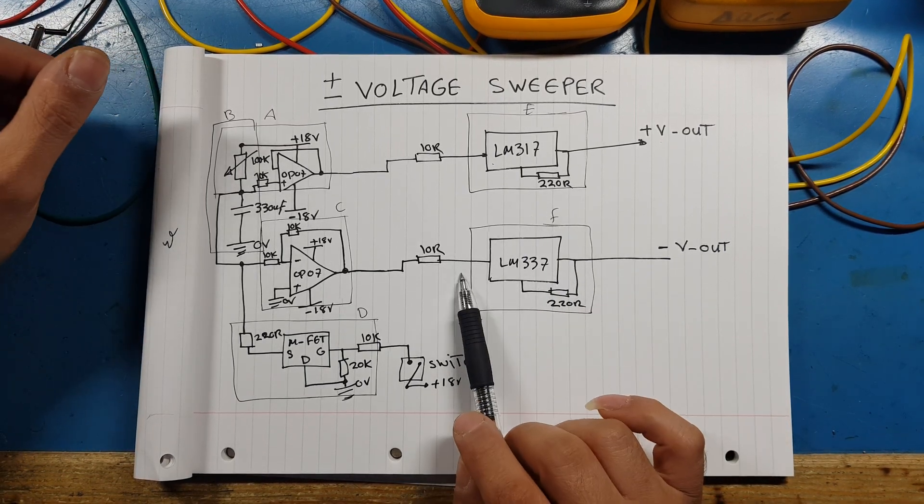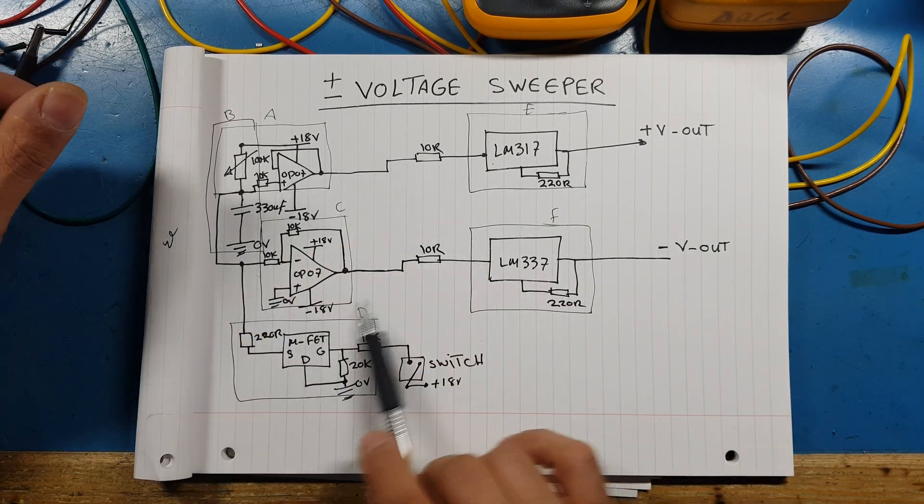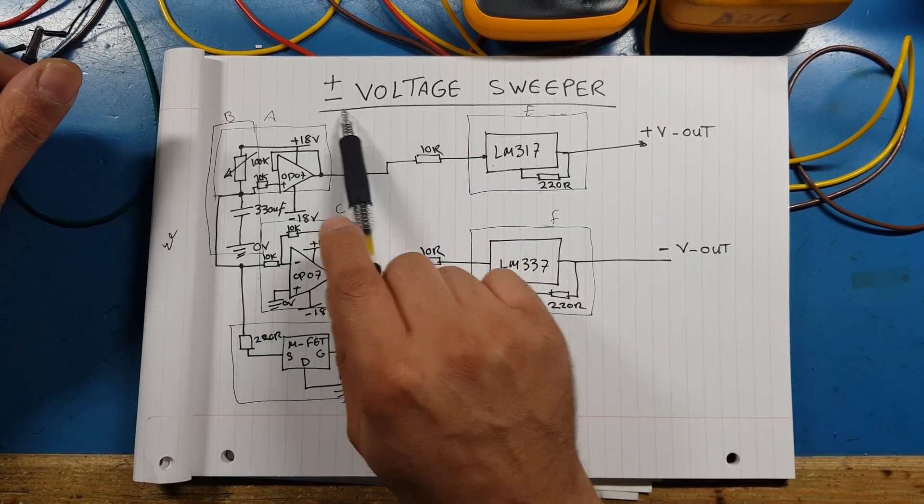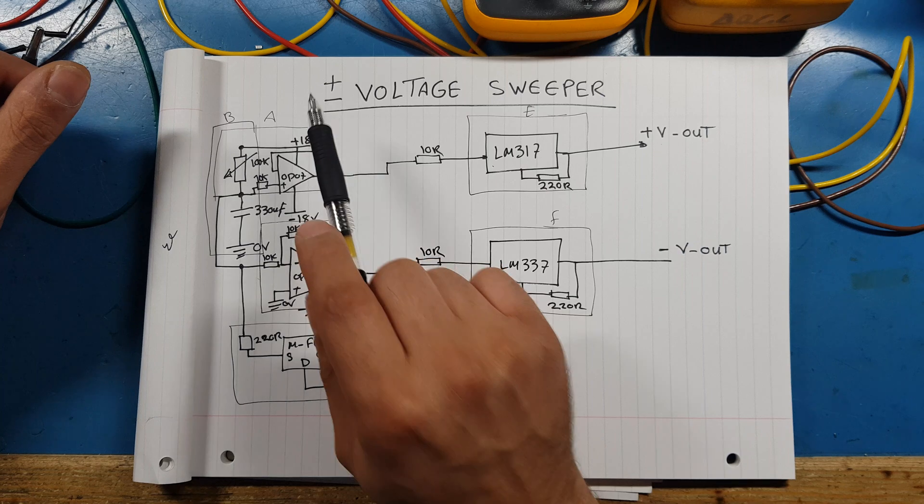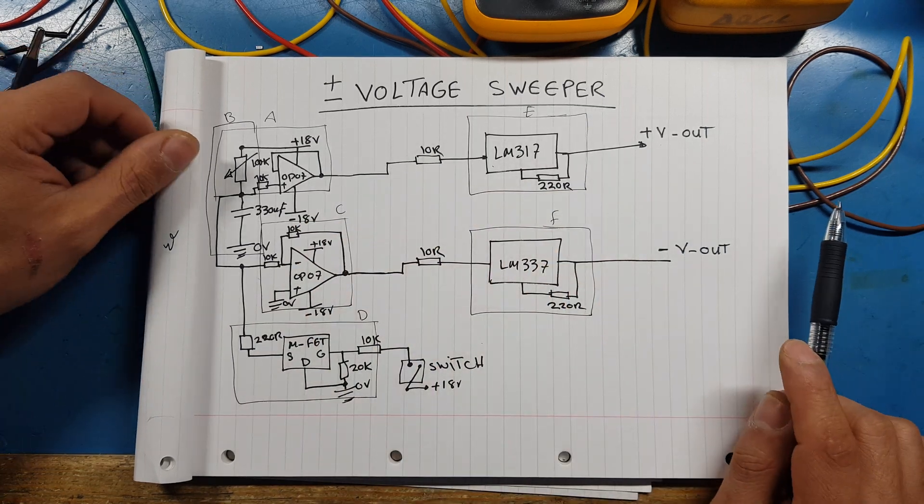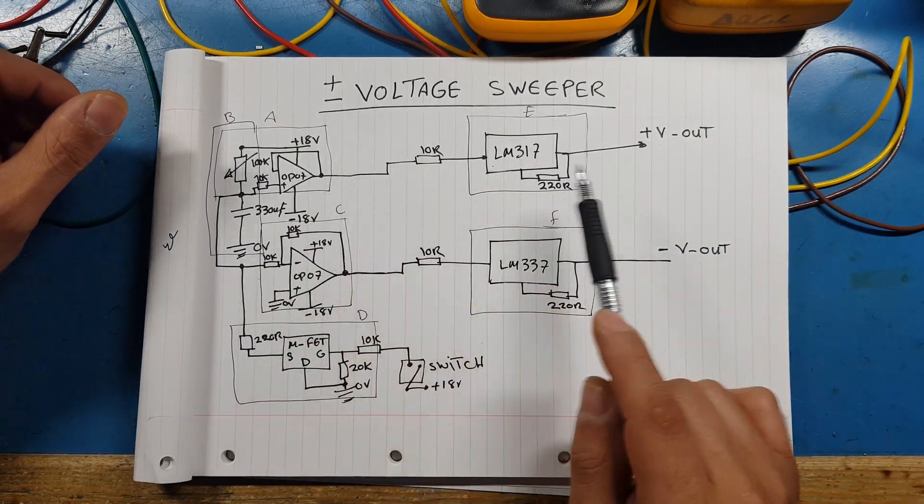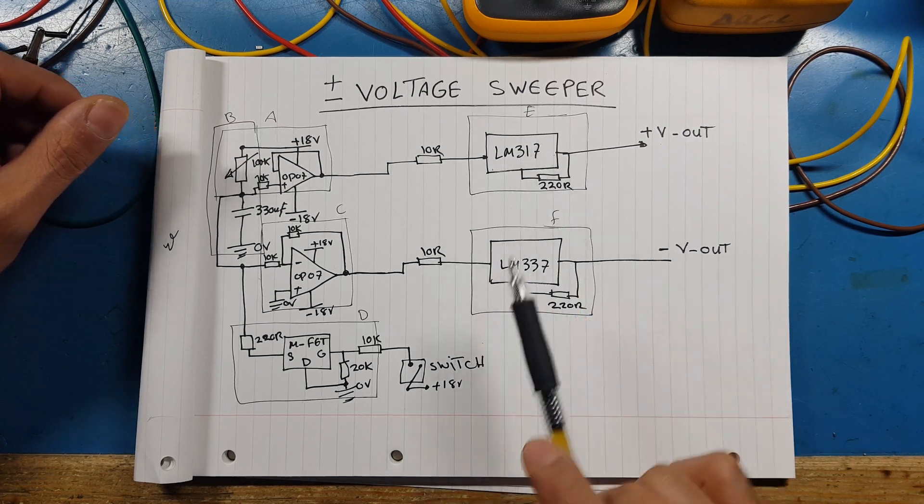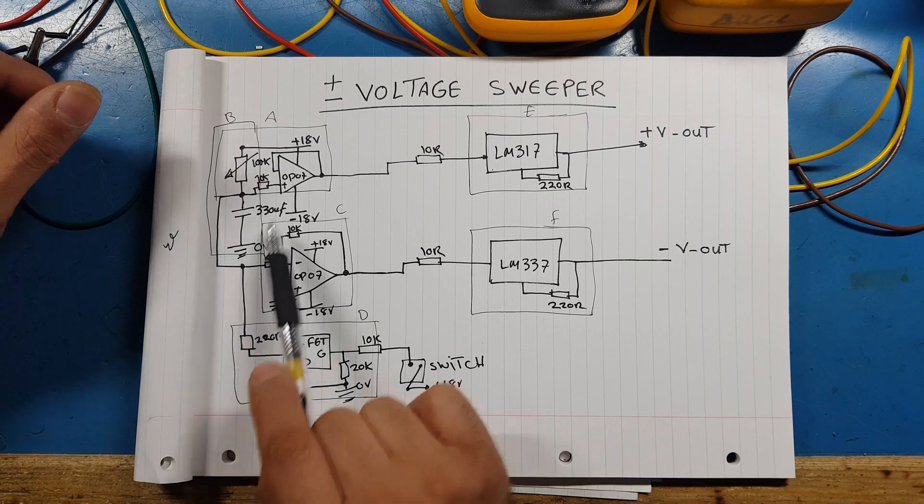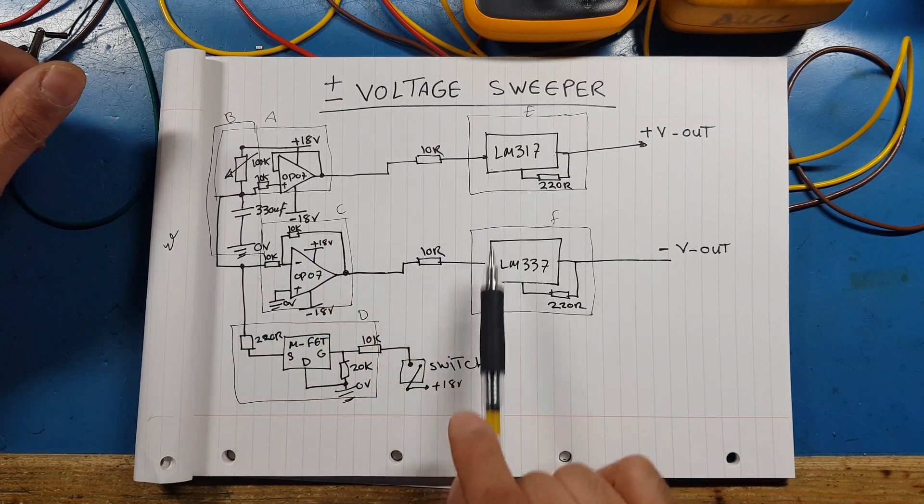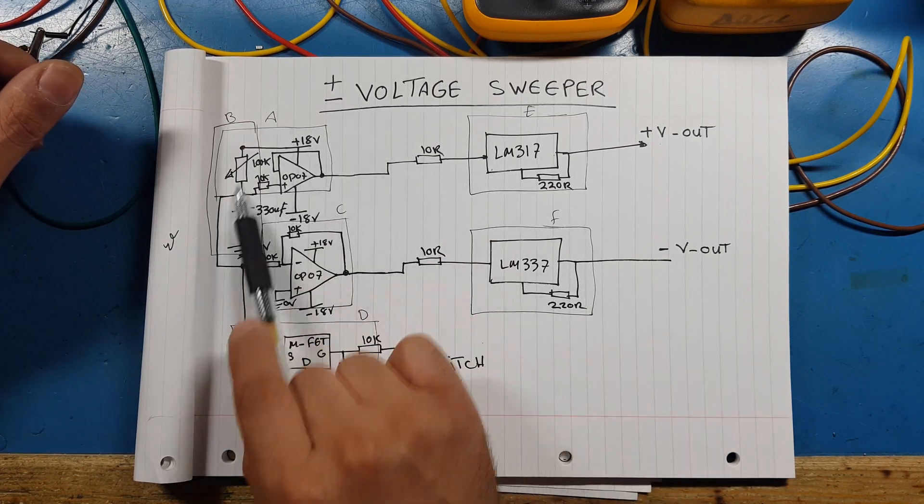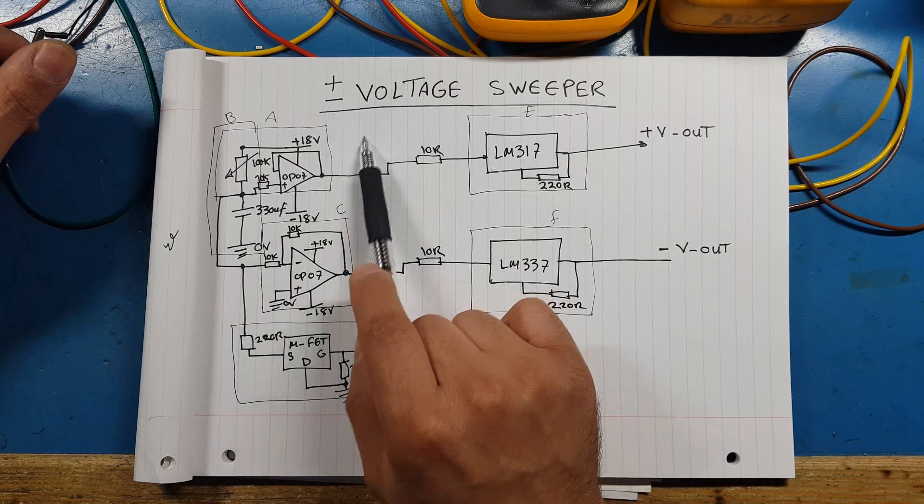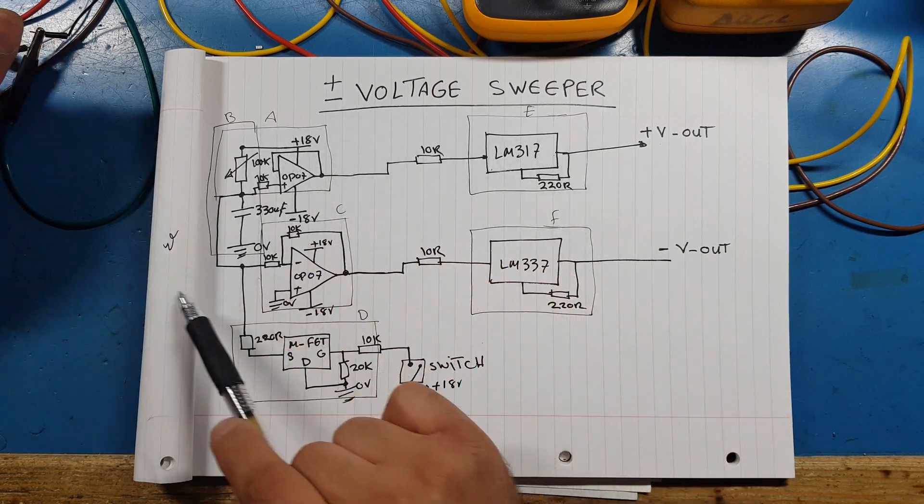Op-amps offset voltage and a few other parameters. Basically what it is is a voltage plus and minus power supply voltage sweeper. So what it does is got two voltage regulators, LM317 and LM337, plus and negative, and we are feeding voltage into their set pins but the voltage is swept from zero volt to almost to their power supply rail.